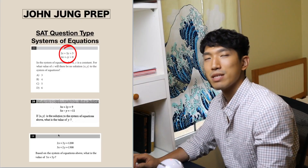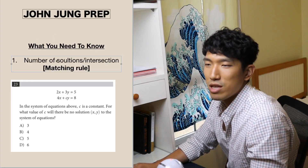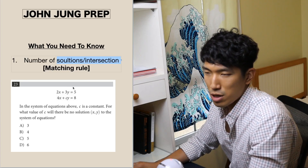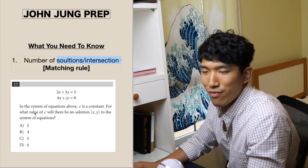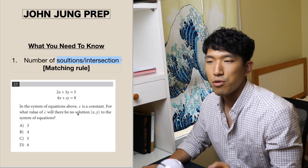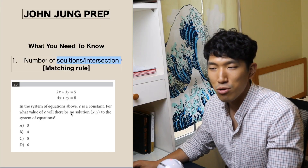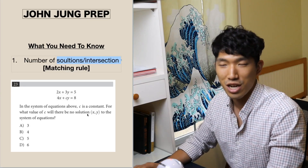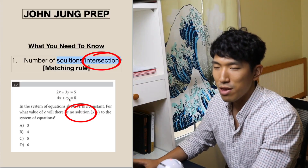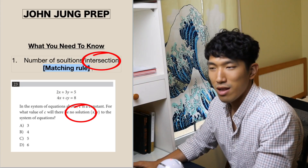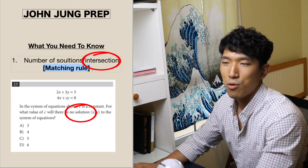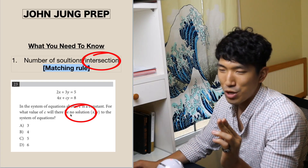There are three types of systems of equations questions. The first type is the number of solutions, or intersection between two lines. For example, given two equations where c is a constant, the question asks: for what value of c will there be no solution? No solution means there is no intersection between the two lines. To solve this, we use something called the matching rule, which tells us when there's no solution, one solution, or infinite solutions.